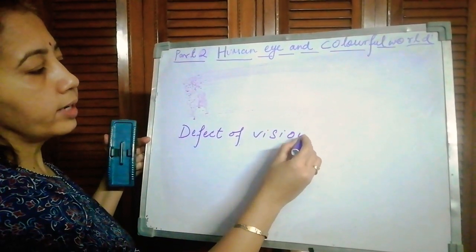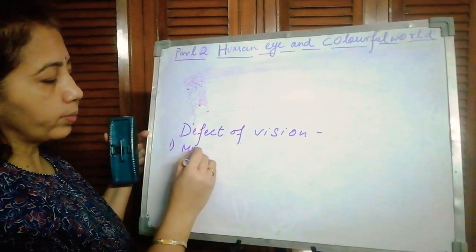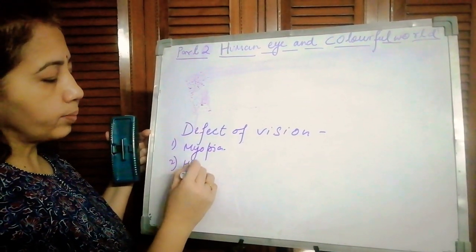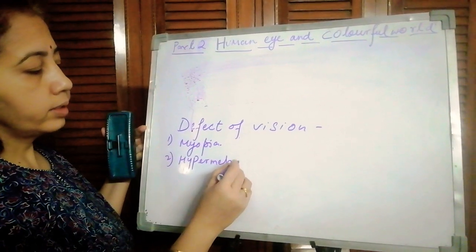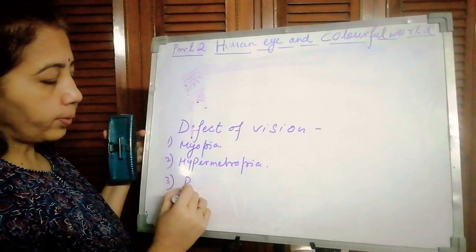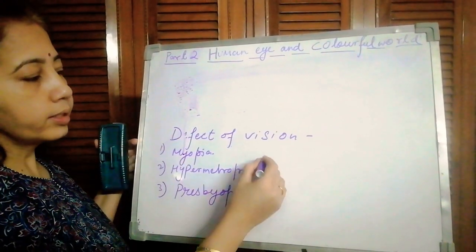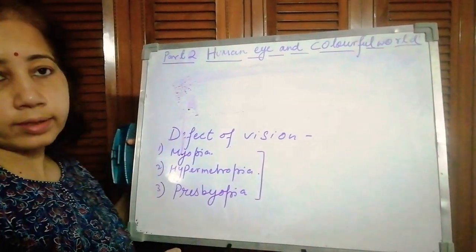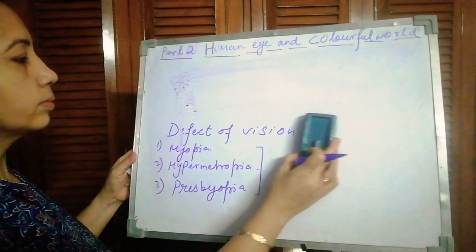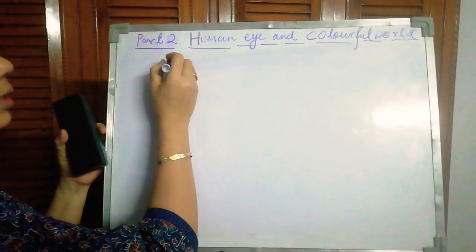In our NCERT there are three defects of vision: one is myopia, another is hypermetropia, and the third is presbyopia. These three are listed in our NCERT. So we will start with myopia.